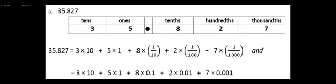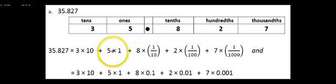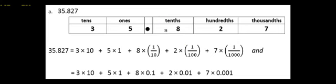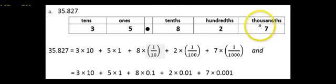When I write a number in expanded form, I'm showing the value of each digit in the number. I've written the number in the place value chart. The three is in the tens place, so it's the same as three times ten. The five is in the ones place, so that's five times one. The eight is in the tenths place, so in fraction form it's eight times one-tenth. The two is in the hundredths place — two times one-hundredth. And the seven is in the thousandths place — seven times one-thousandth.